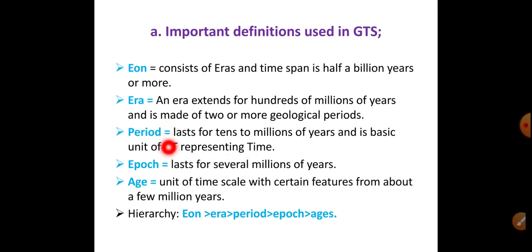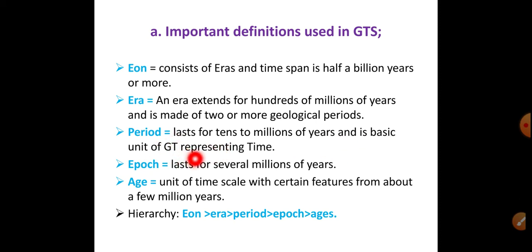A Period lasts for 10 to millions of years and is the basic unit of geological time. The hierarchy is: Eon, Era, Period, Epoch, and Age.